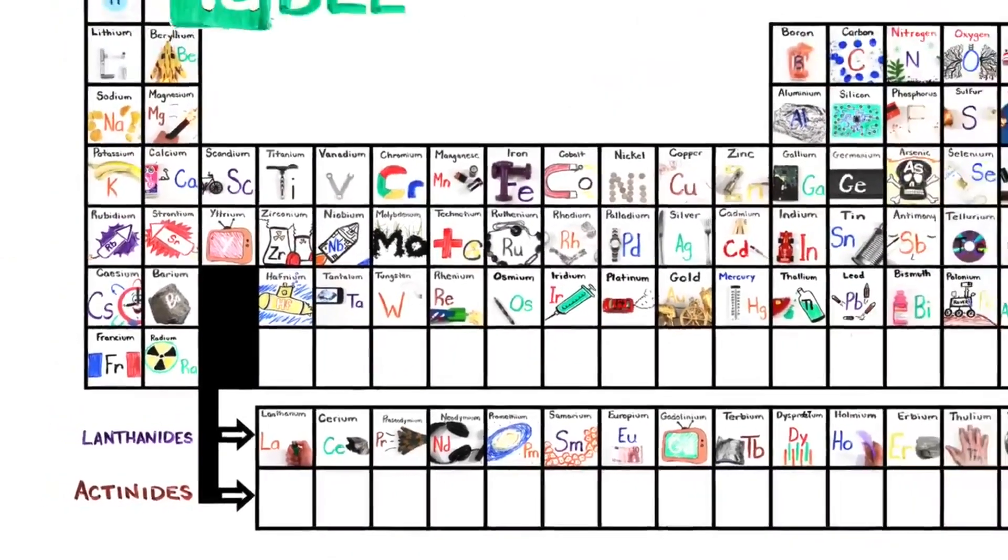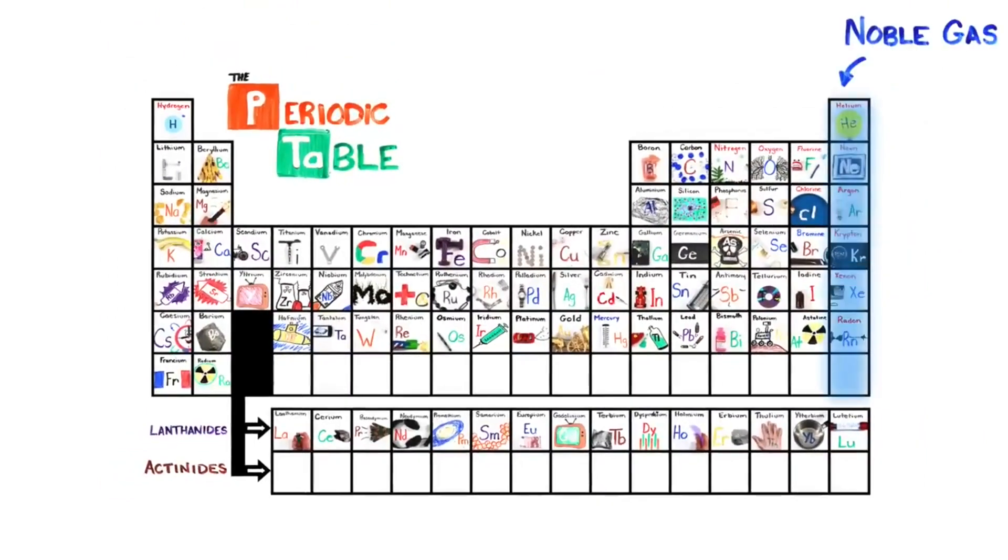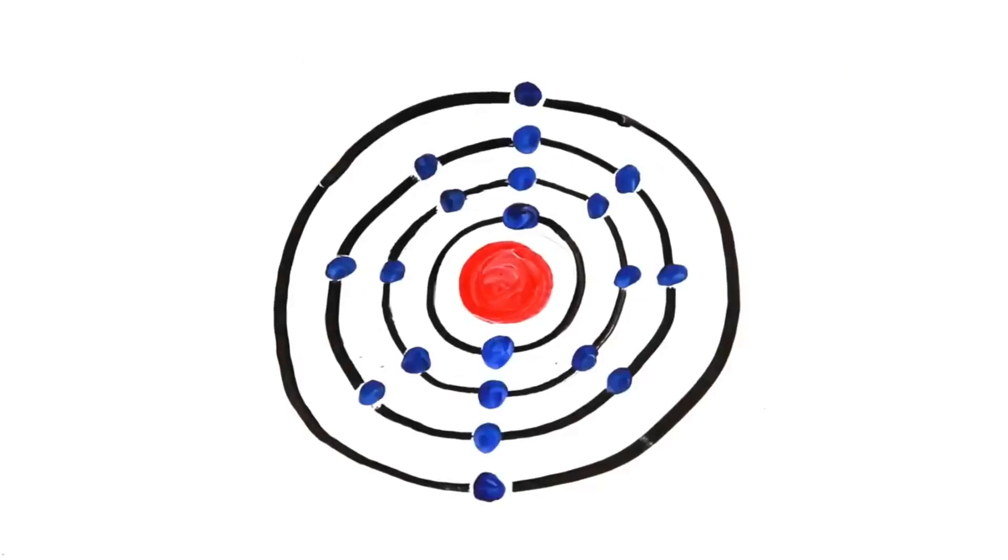This is the Periodic Table, Noble gas is stable. Halogens and Alkali react aggressively. Each period will see new outer shells, electrons are to the right.